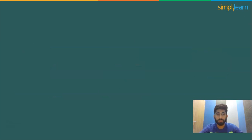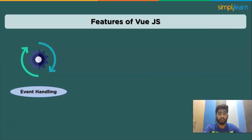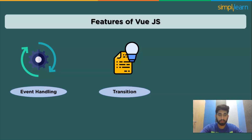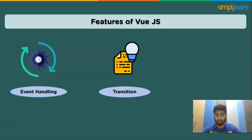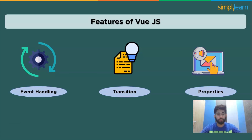The next feature is event handling. DOM elements have the property called v-on, which helps them listen to and handle events in Vue.js. The next one is transitions and animations — when HTML elements are added, changed, or removed from the DOM, Vue.js offers a variety of techniques to apply transitions. An element must be wrapped in a built-in transition component of Vue.js. Third-party animation libraries are also simple to add. The next feature is computed properties, which is beneficial for paying attention to UI element changes and making appropriate calculations without further coding.